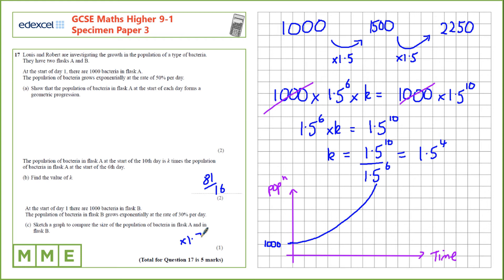We know that flask B increases at a lower rate. It's only a multiplier of 1.3. There's going to be a shallower curve. However it still starts at a thousand. So something like that. Last thing we need to do is just label those two. So that's flask A and that's flask B.